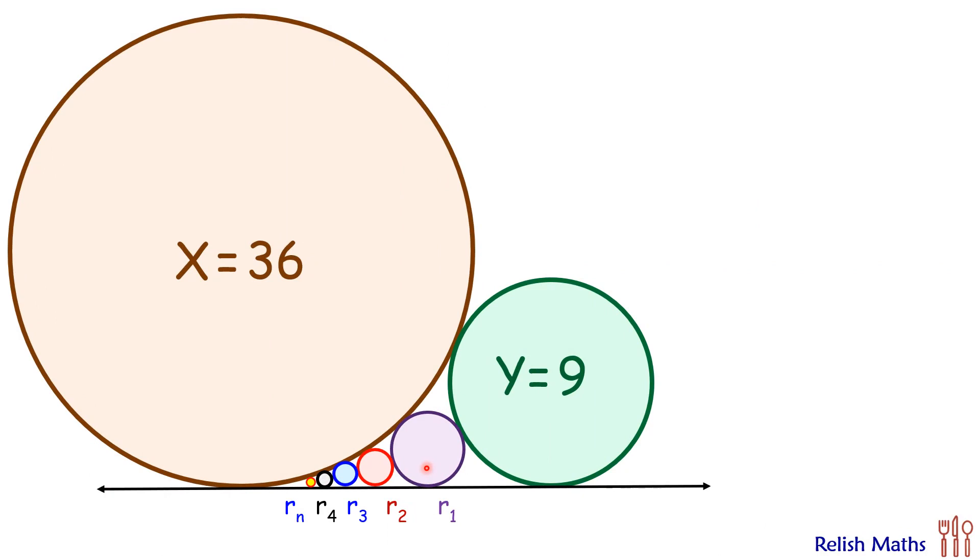And what about instead of 1, 2, or 3, there are 10 circles and I have to find radius of the very very small 10th circle which is fitted here? So can we derive a general formula?